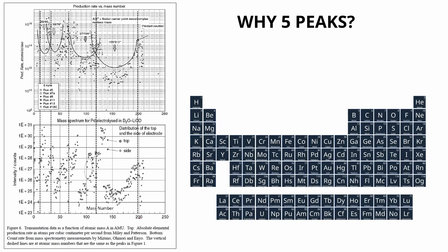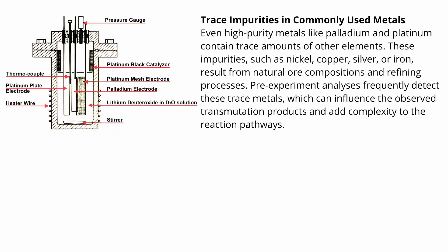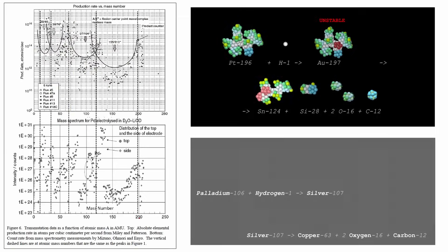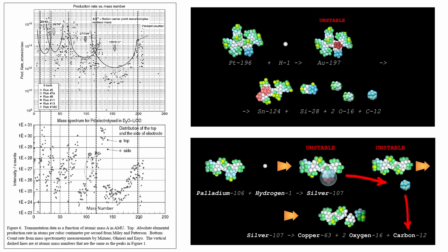You might wonder, if such processes are possible, why do we observe only five distinct peaks, instead of a broader spread of detected elements? To understand this, we must consider the role of the metals commonly used in LENR setups. In most experiments, palladium and platinum are the primary metals, both of which can undergo small stepwise isotopic changes, creating heavier isotopes. In some cases, these isotopes form unstable structures that undergo fission. The resulting reactions contribute to the formation of the five observed peaks.